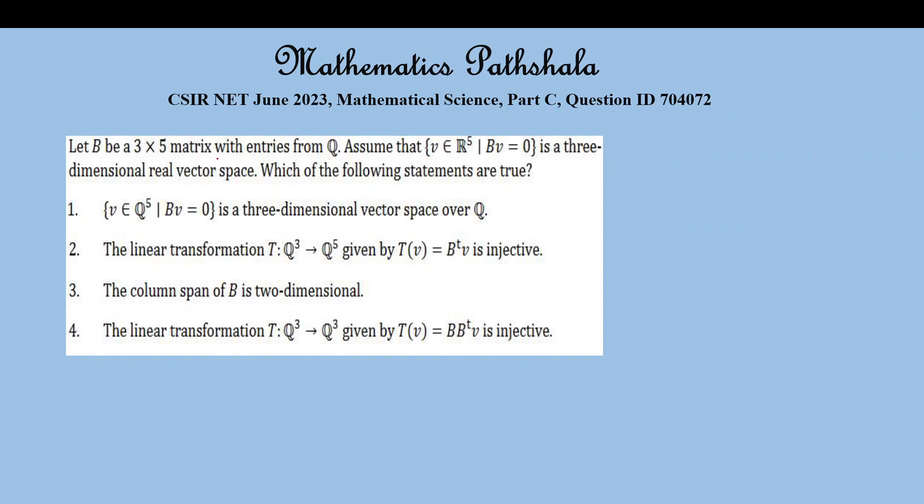Let B be a 3 by 5 matrix with entries from Q, the rational numbers. Assume that V belongs to R to the power 5 such that Bv equals 0 is a three-dimensional real vector space. This means the nullity of B equals 3. The nullity of B is 3 dimensions.